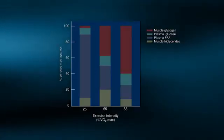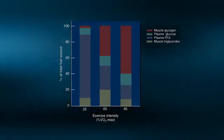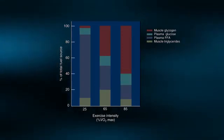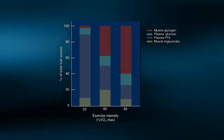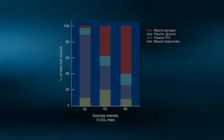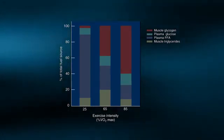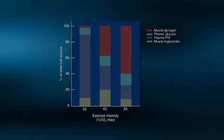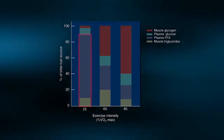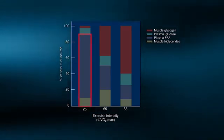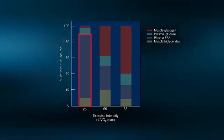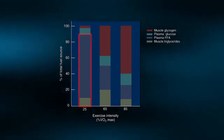Now let's examine the contribution of fats during a very different type of exercise. In a graded exercise test, the workload, and thus the exercise intensity, is increased every 2 to 3 minutes until the individual is exhausted and has reached their VO2 max. Notice at the early workloads of the graded exercise test, at the easy exercise intensity of 25% of VO2 max, approximately 90% of the energy is being supplied by fats.